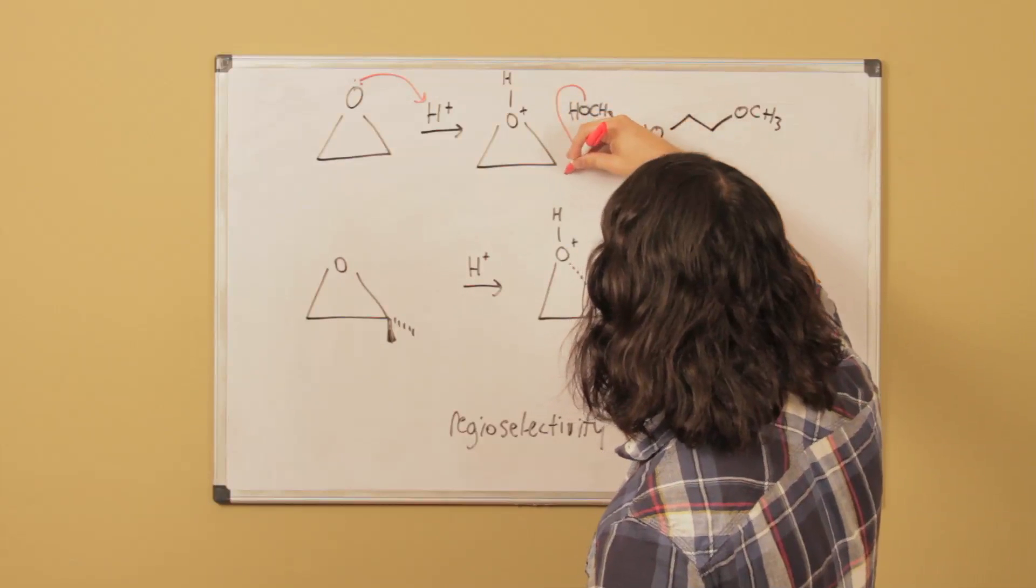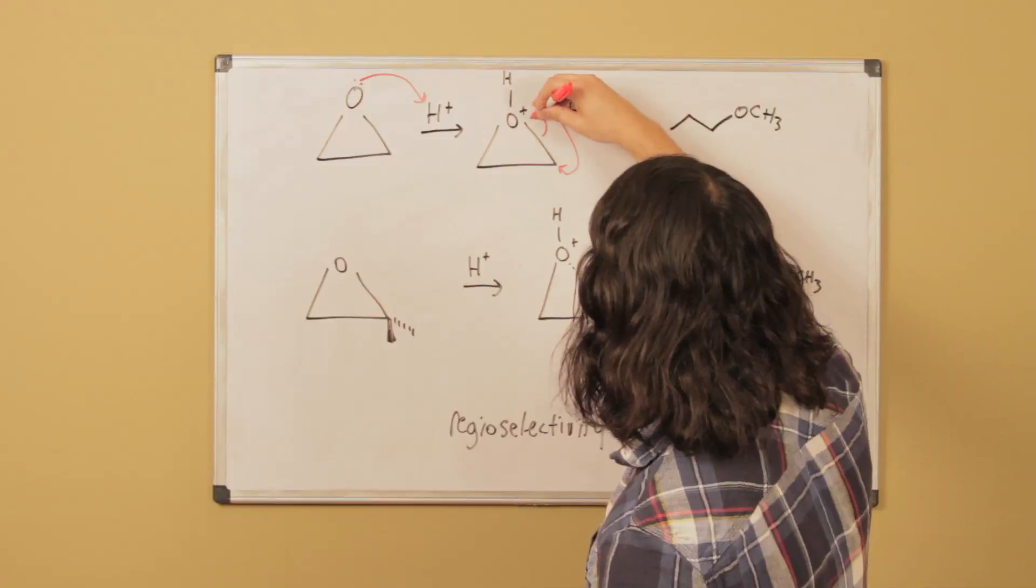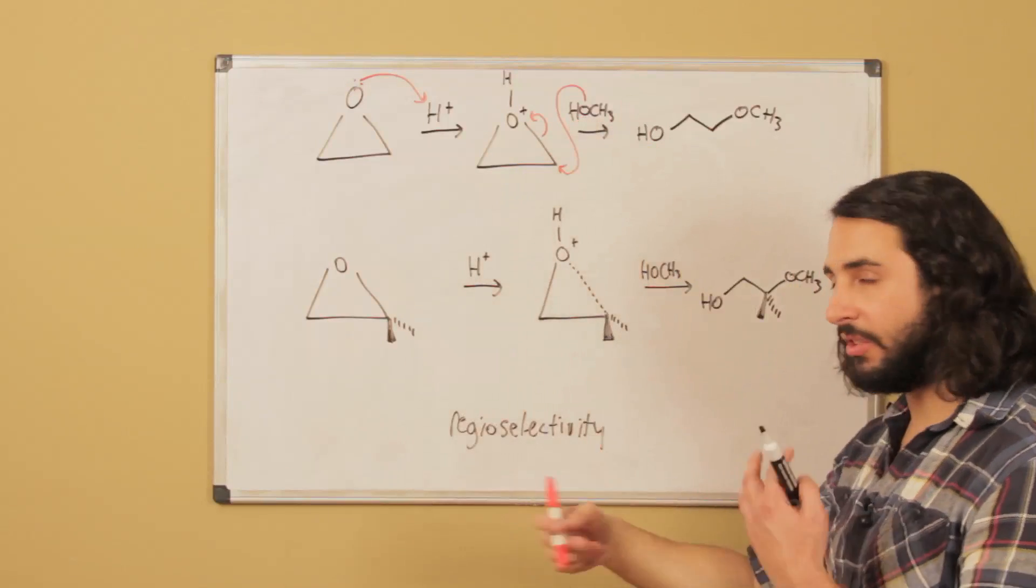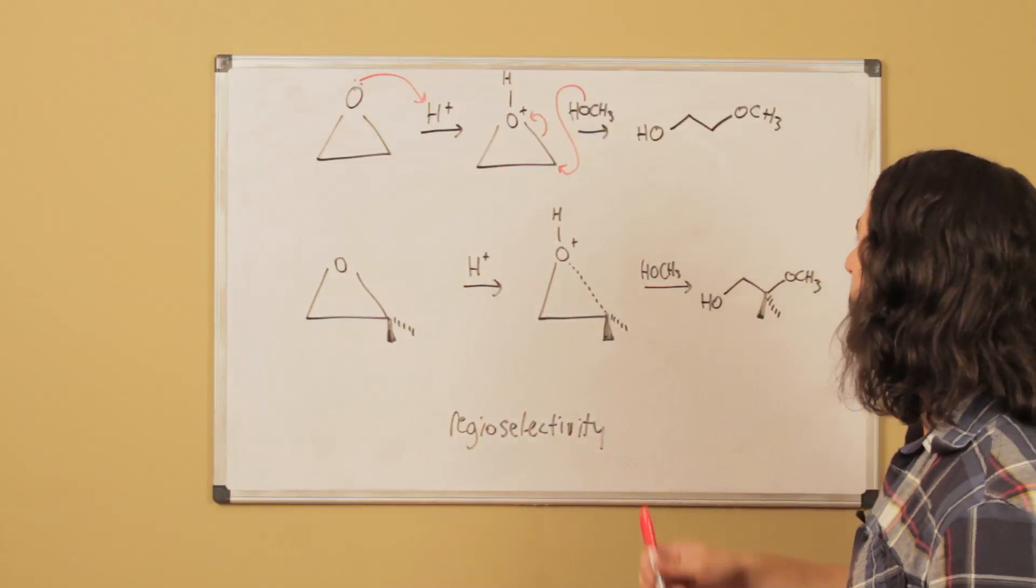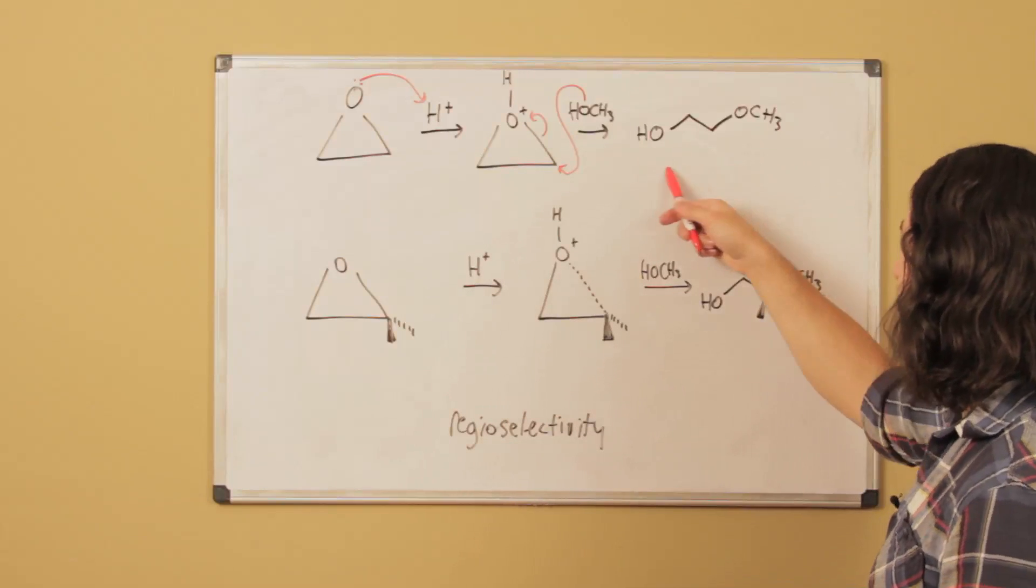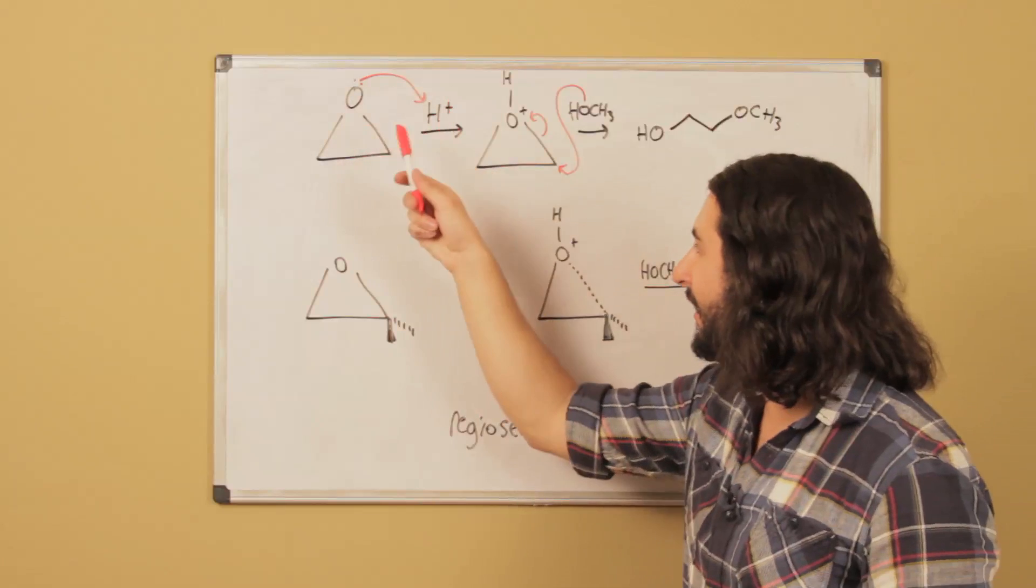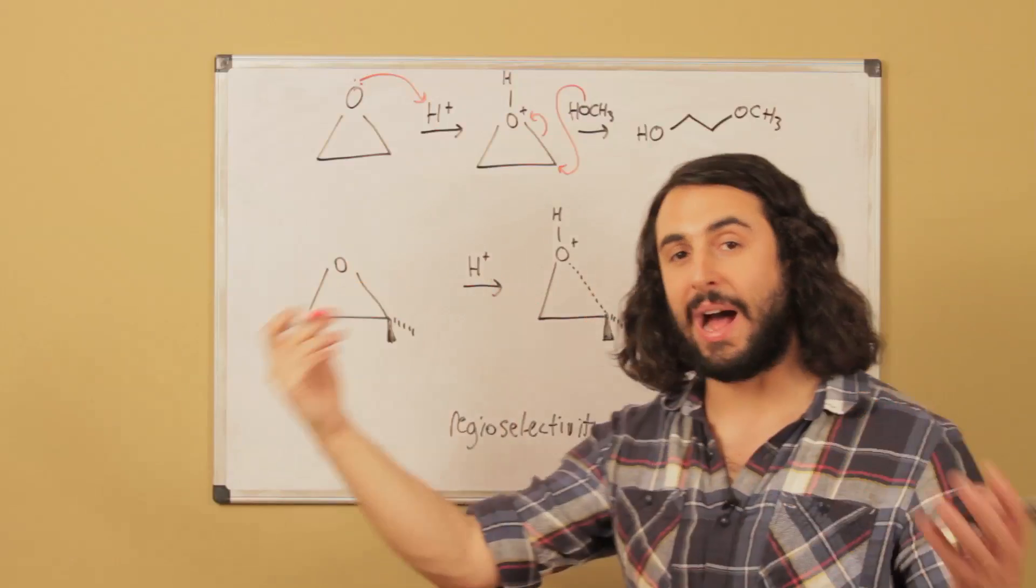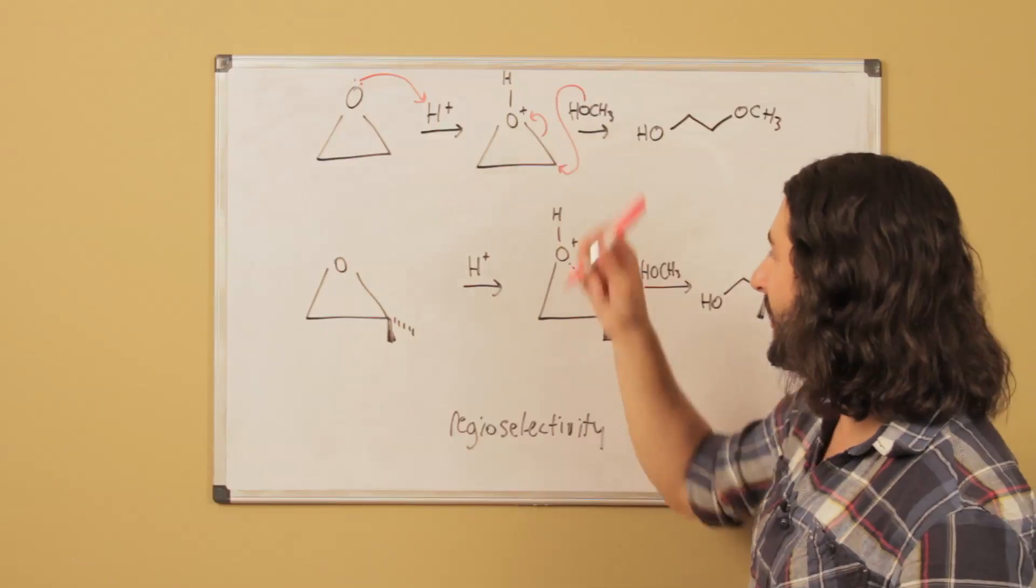This is going to be susceptible to attack from even just something like methanol. This is going to go ahead and pop open, and then after the fact that'll deprotonate and a solvent molecule will pick it up and we're going to get our product right here. Once again in acidic conditions this can protonate and then even something weak like methanol is going to go ahead and pop open that epoxide because of the ring strain as well as wanting to neutralize that oxyanion.